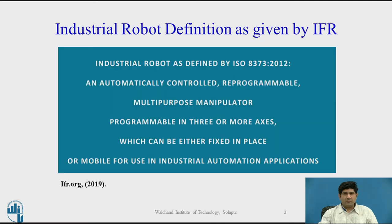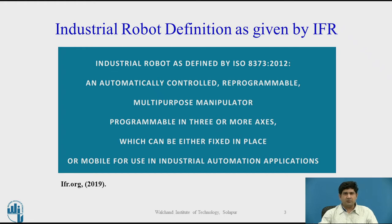Before we begin, let us recall the definition of industrial robots as per the International Federation of Robotics, which uses the definition given by ISO 8373:2012. As per this, the industrial robot is defined as an automatically controlled, reprogrammable, multipurpose manipulator programmable in three or more axes, which can either be fixed in place or mobile, and used for industrial automation applications. I reiterate this definition from time to time to create consistency and to put the context of the sensors we are going to look at from the point of view of industrial robots.